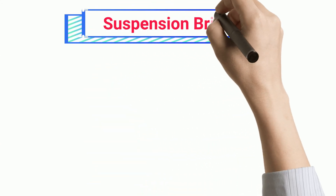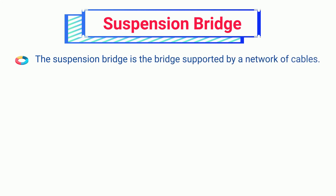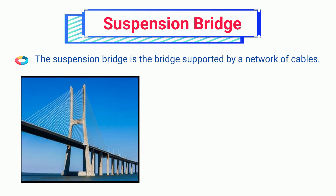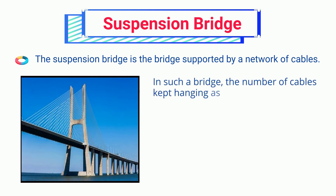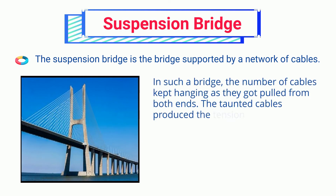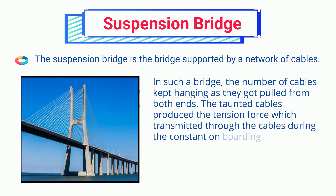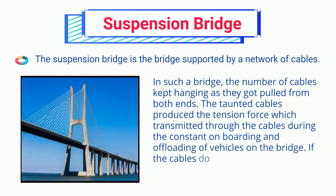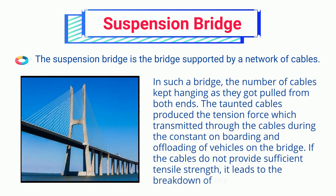Suspension Bridge. The suspension bridge is a bridge supported by a network of cables. In such a bridge, a number of cables are kept hanging as they are pulled from both ends. The taut cables produce tension force which is transmitted through the cables during the constant onboarding and offloading of vehicles on the bridge. If the cables do not provide sufficient tensile strength, it leads to the breakdown of the bridge.